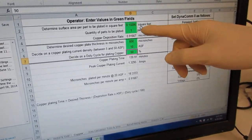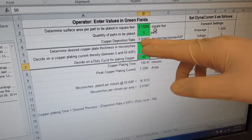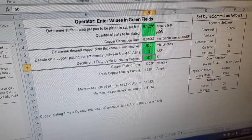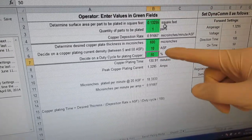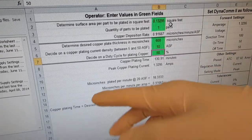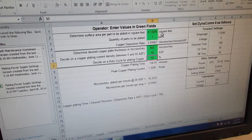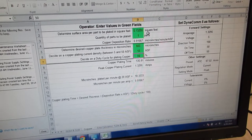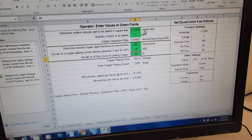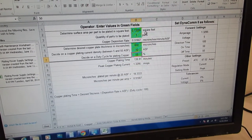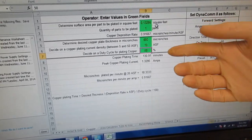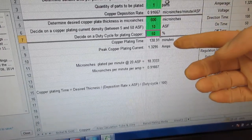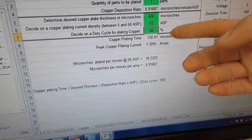Also, we're doing just one board, and we set it for 600 micro inches thickness of copper. And we're doing 10 ASF, which is the copper plating current density of the board. That's how much current is going to go through it. So the lower the number is, the longer it's going to take. We do a 50% duty cycle, and it says it's going to take 130 minutes.